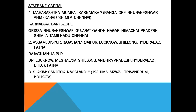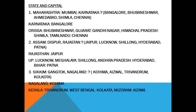Sikkim — Gangtok. Nagaland — what? Options: Kohima, Aizawl, Trivandrum, Kolkata. Kohima is the capital of Nagaland. Trivandrum is the capital of Kerala. Kolkata is the capital of West Bengal. Aizawl is the capital of Mizoram.